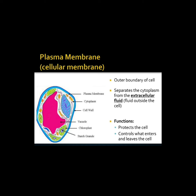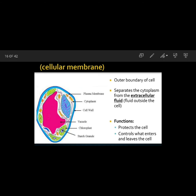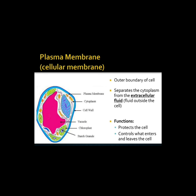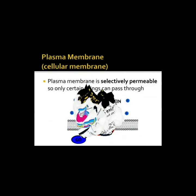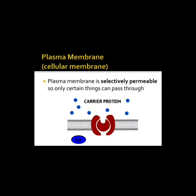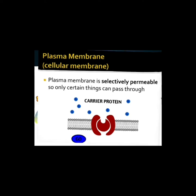Now we are going to elaborate every single compartment of the cell. First, the plasma membrane or cellular membrane. As you can see in the picture, the plasma membrane is the outer boundary of the cell, separating the cytoplasm from the extracellular fluids outside the cell. Functions of the cell membrane: it protects the cell from foreign infections; it controls what enters and leaves the cell; and the plasma membrane is selectively permeable, meaning only certain things can pass through, as you can see in the pictures.